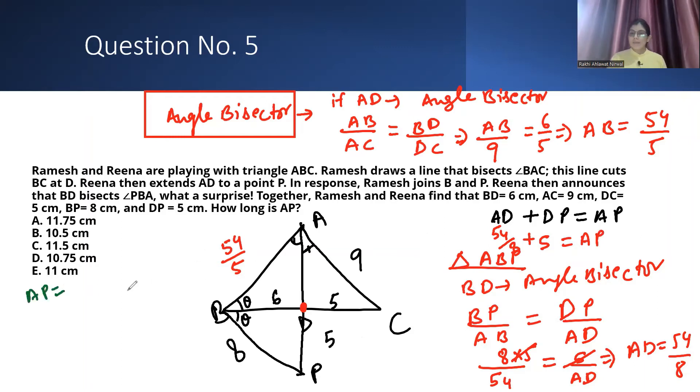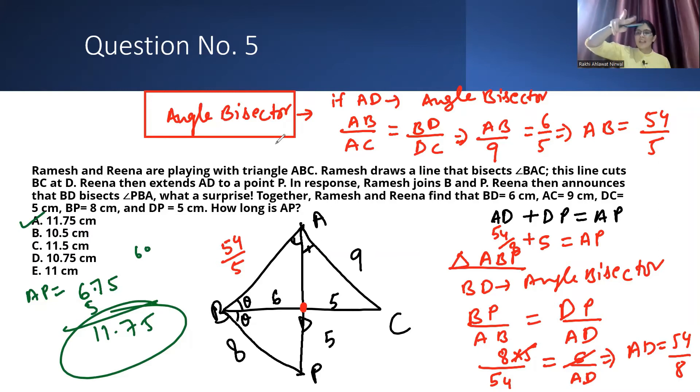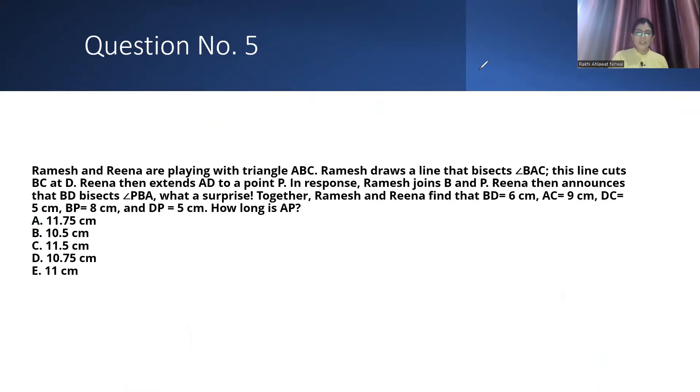AP value will be 54 by 8. 8 times 6 is 48, 6 remains, 8 times 7 is 56, and 8 times 5. So 6.75 plus DP value 5, the answer is 11.75. Option A will be your correct answer. In this question, I used the property of the angle bisector. The angle bisector line divides in the same ratio. With this single property, your question is solved.